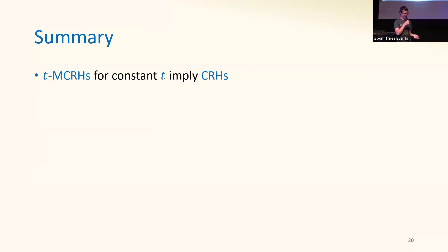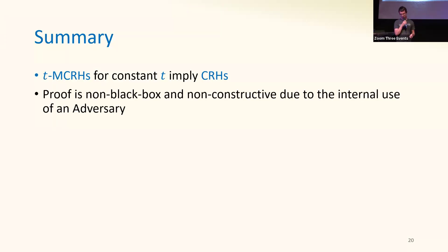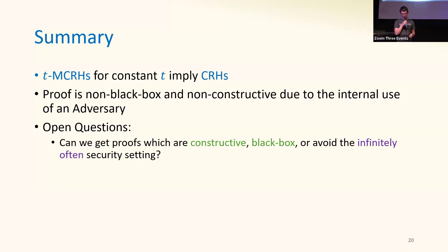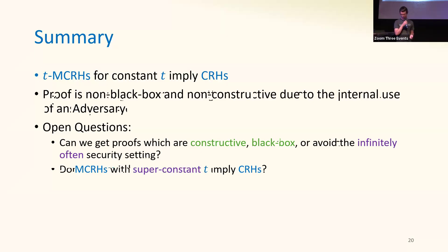In summary, if there is a T-MCRH for any constant T, then there's also a CRH, and the starting MCRH just needs to have some small multiplicative factor of shrinkage. This was in an infinitely-often setting. Interestingly, the construction came from the adversary, being both non-black-box and non-constructive. Open questions include whether we can get constructive proofs or ones in the standard security setting, and whether this can extend to super-constant values of T.